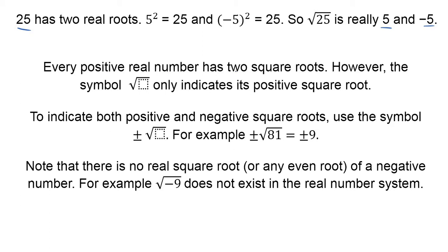Every positive real number has two square roots. Now, they might not be nice numbers like this one, but every positive real number is going to have a plus or minus. However, when we see just this square root sign, we're only talking about its positive square root.